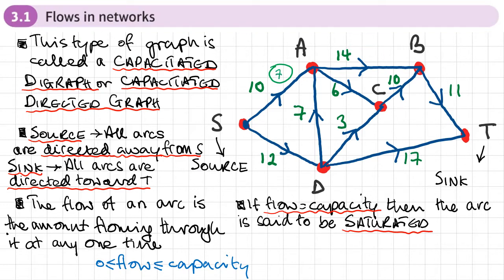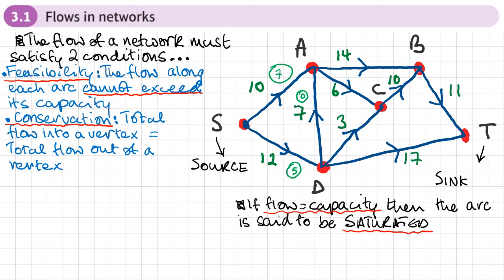The flow of a network must satisfy two conditions: the feasibility condition and the conservation condition. The feasibility condition means that the flow along each arc cannot exceed its capacity. For example, there is a flow of 7 in arc SA — it cannot exceed the capacity of 10. That arc could be saturated at 10, but it cannot exceed 10. That's the feasibility condition.